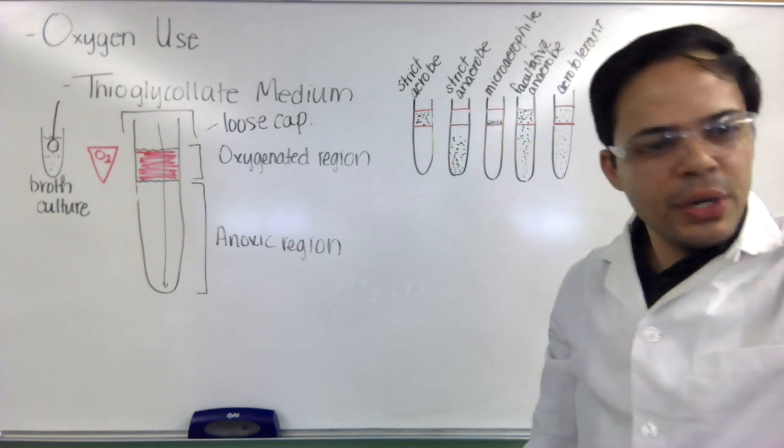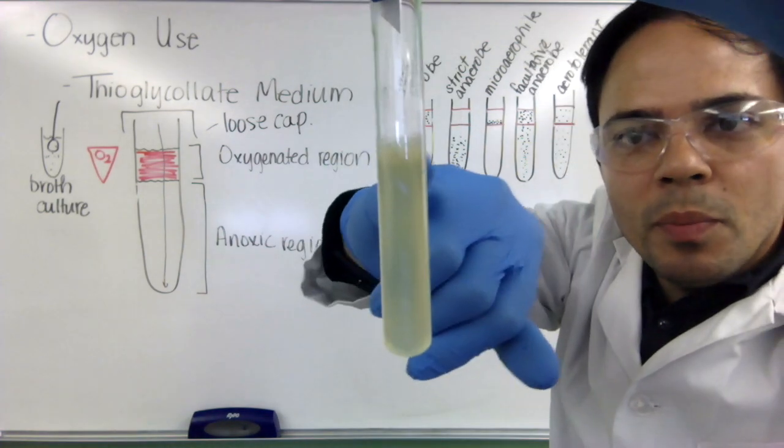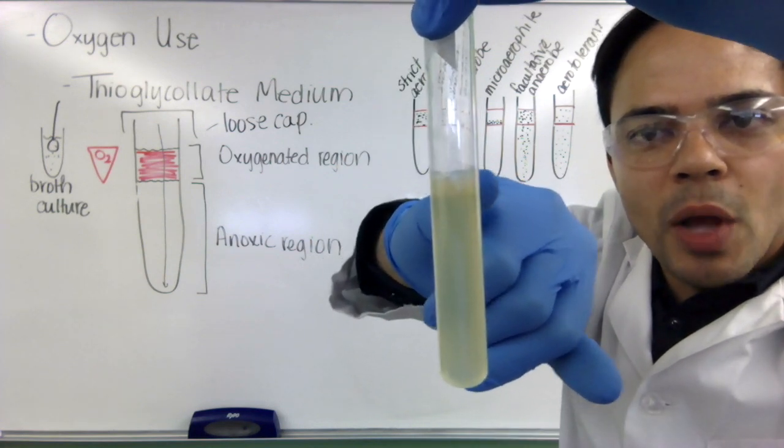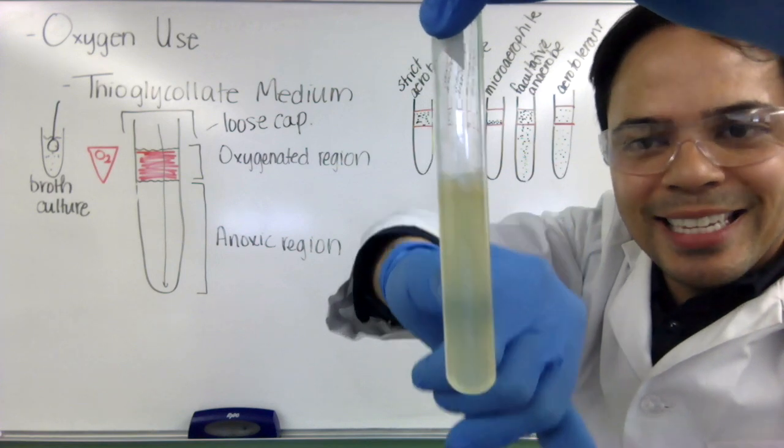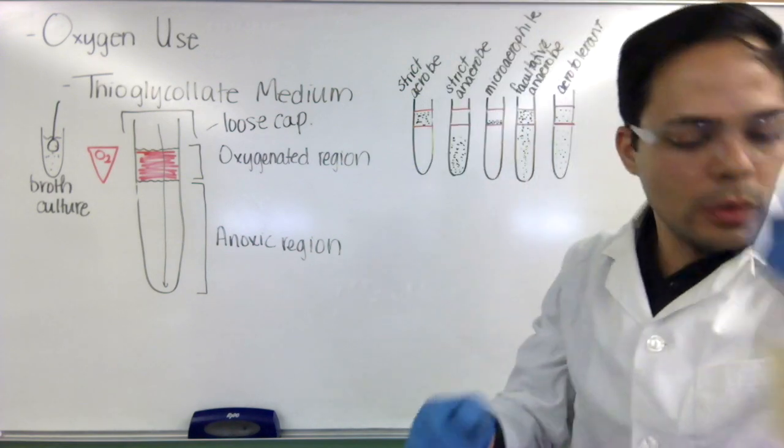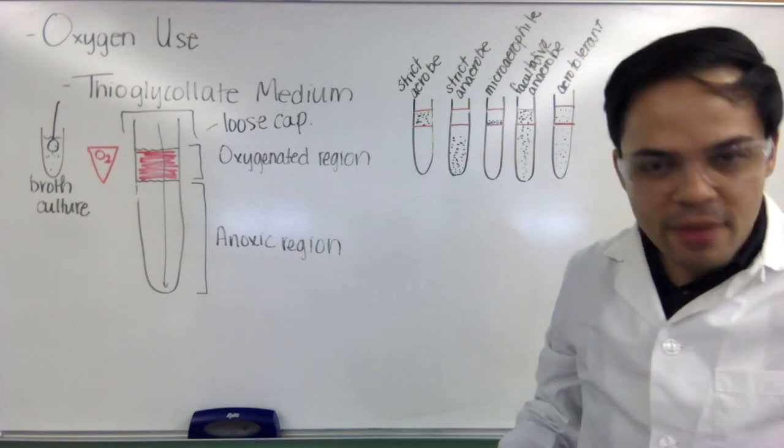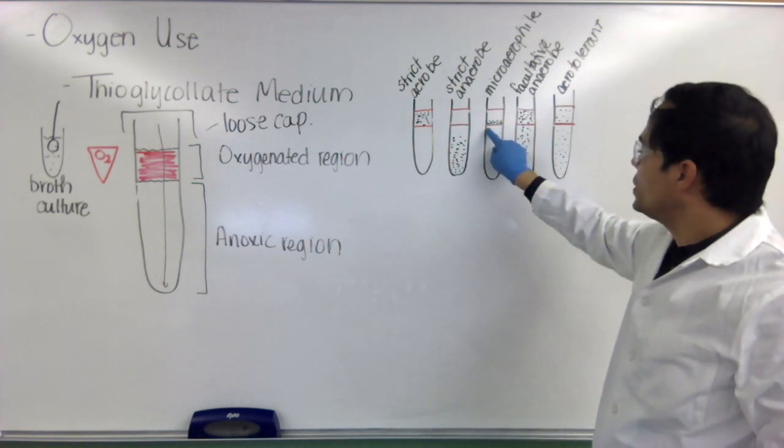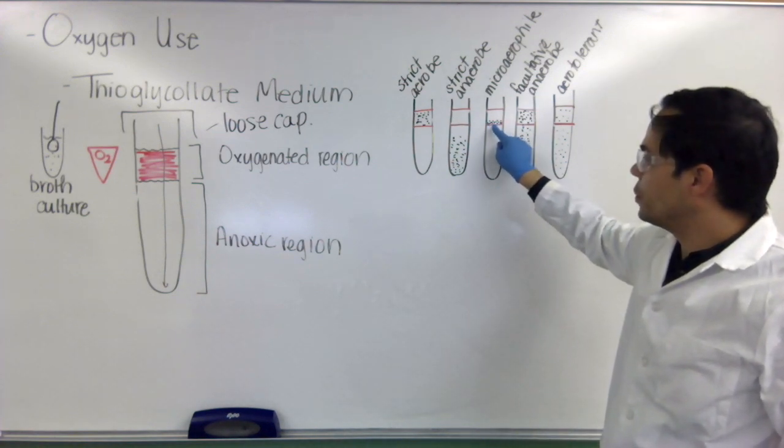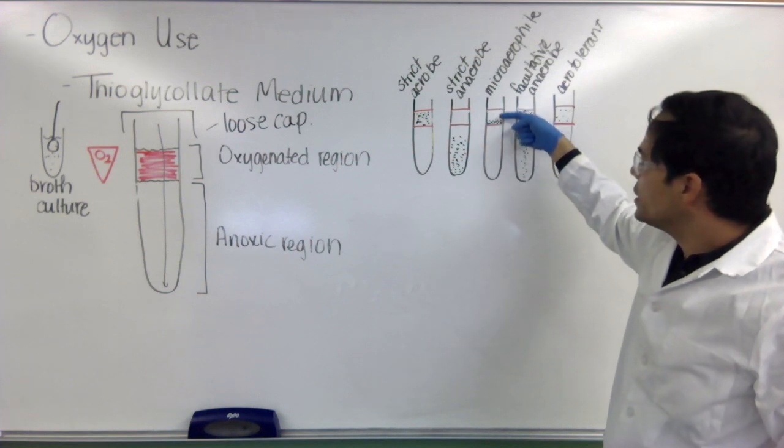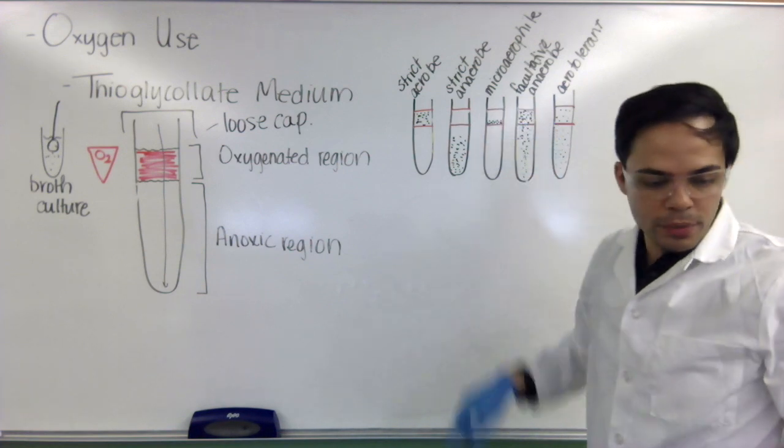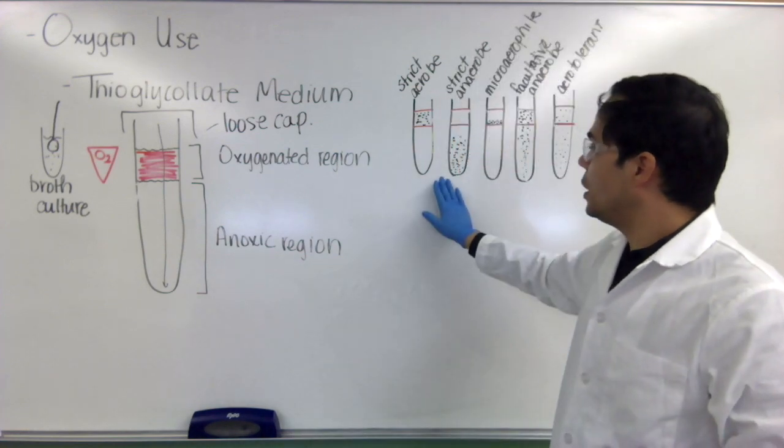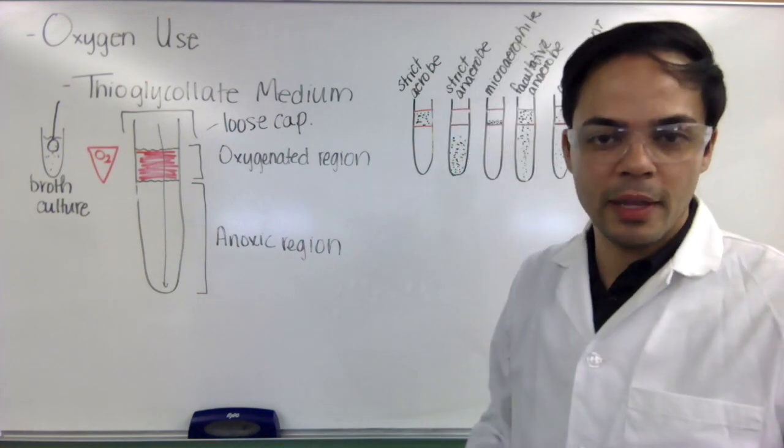This final one here has a pattern of growth that is equal throughout the tube in the oxygenated region and the deoxygenated region. So this one would be aerotolerant. Now, I don't have an example of the microaerophile, but if we did have that one, you would just see a thin band of growth here, right between where you have lots of oxygen and no oxygen. And that's how you inoculate as well as interpret your thioglycolate medium.